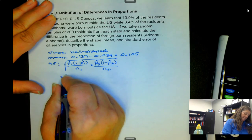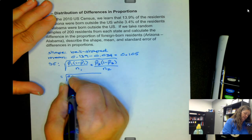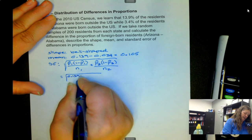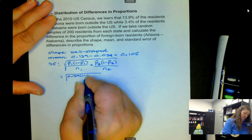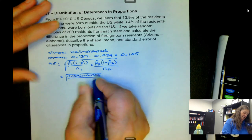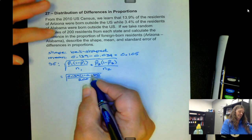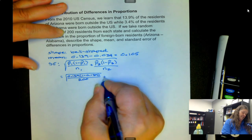So p-hat sub 1 is 0.139, then 1 minus 0.139, and sample size is 200 because it says 200 from each state.